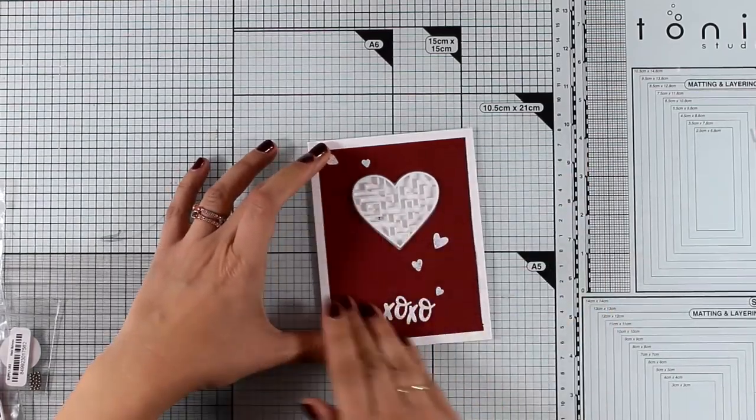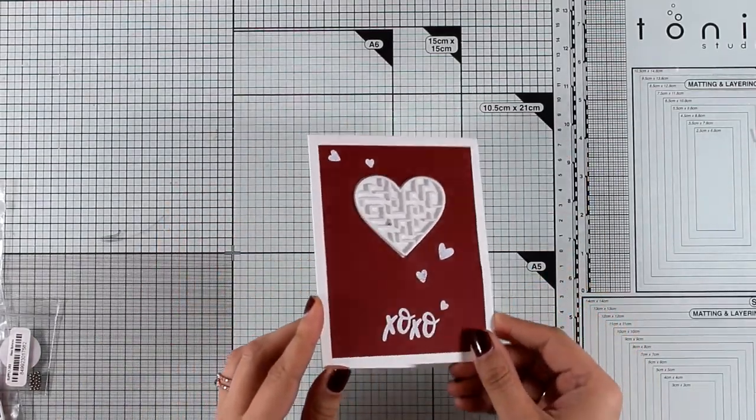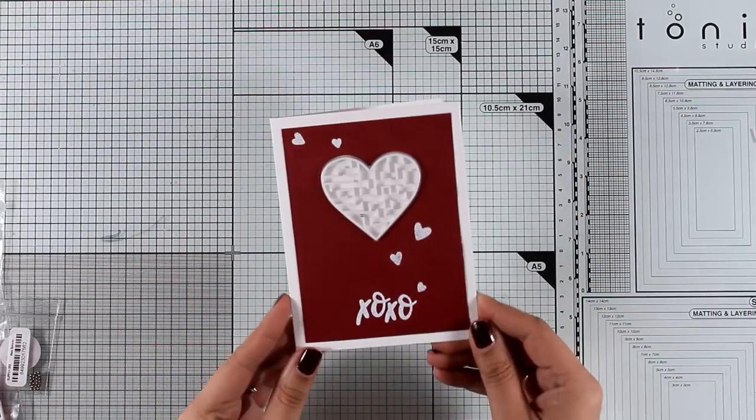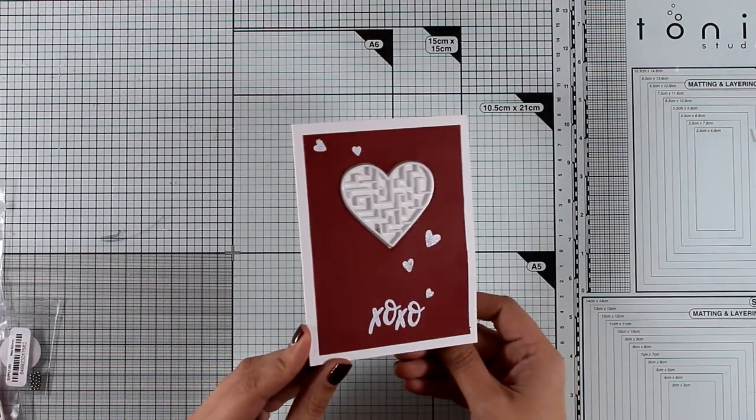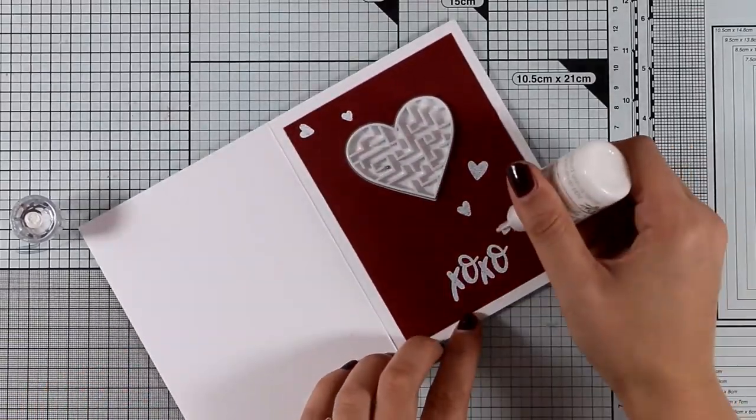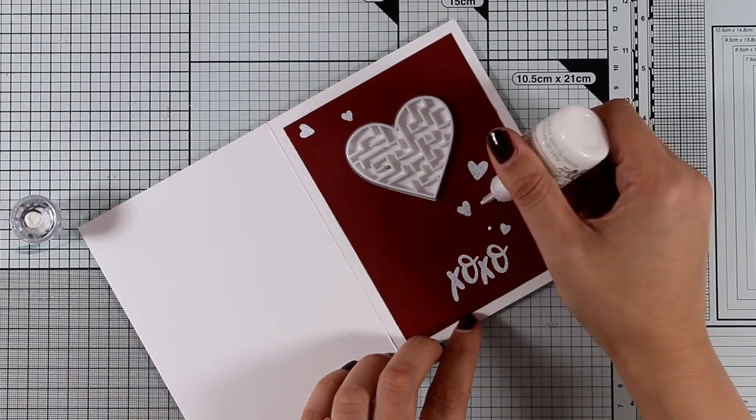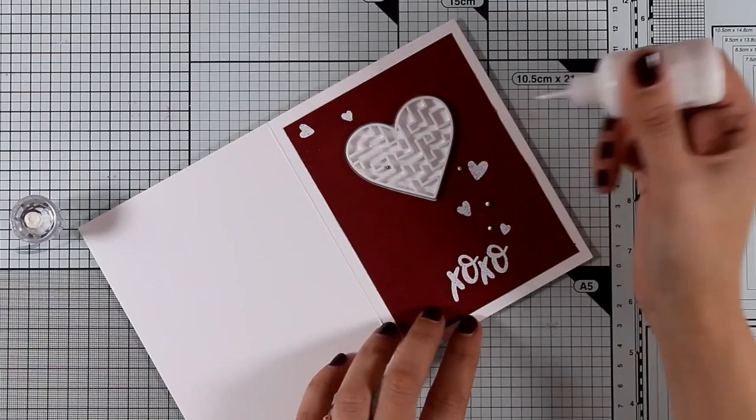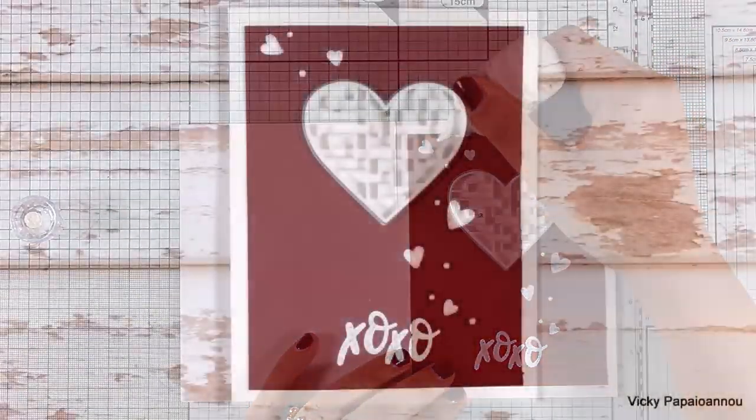This is a clean and simple card. You don't really need to add too much since this is a card with this interactive element, the maze, so there's a lot going on on top of your card. Now I'm going to finish it off with some dots. I'm using my white Nouveau Drops and the dots will go all around those hearts.